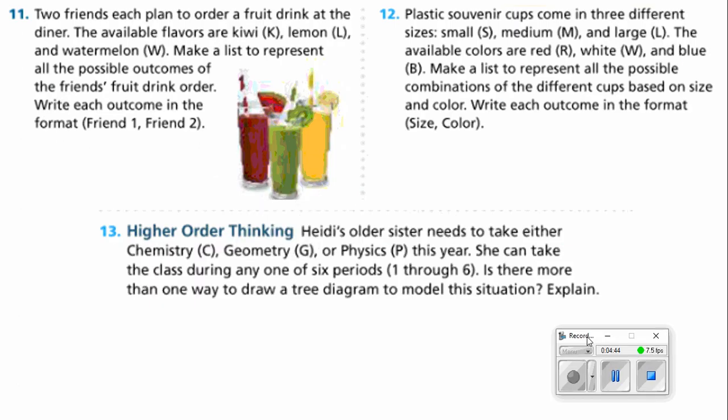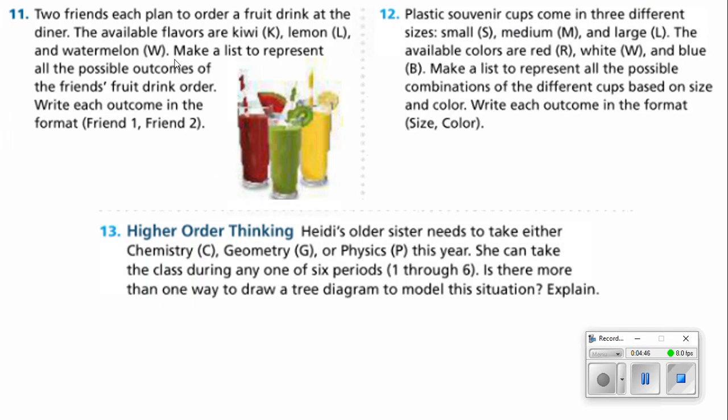Number 11 says two friends each plan to order a fruit drink at the dinner. The available flavors are kiwi, lemon, and watermelon. Make a list to represent all the possible outcomes of the friend's fruit drink orders.